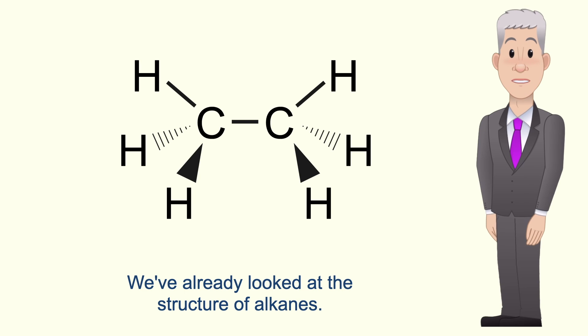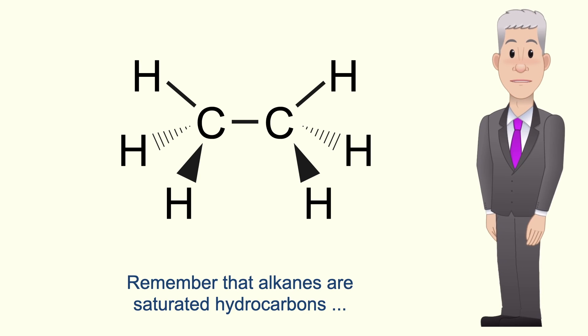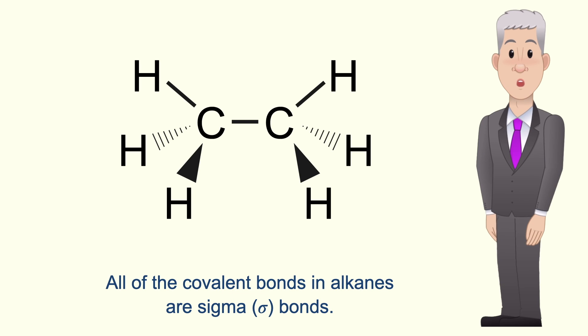We've already looked at the structure of alkanes and I'm showing you here the alkane ethane. Remember that alkanes are saturated hydrocarbons with the general formula CnH2n+2 and all of the covalent bonds in alkanes are sigma bonds.